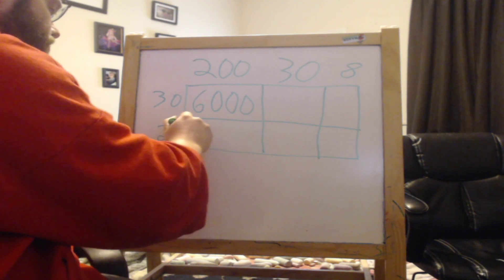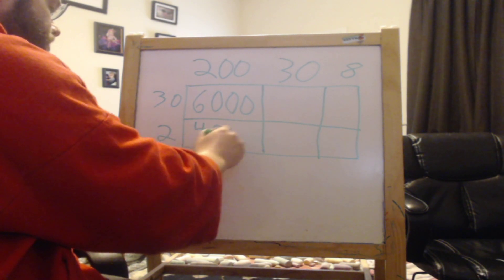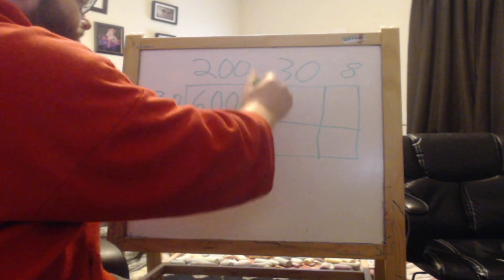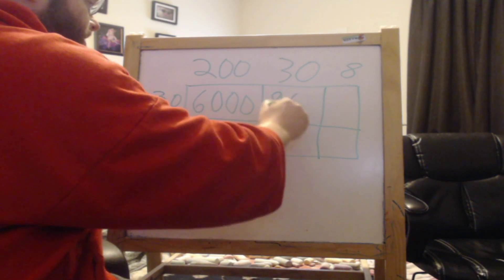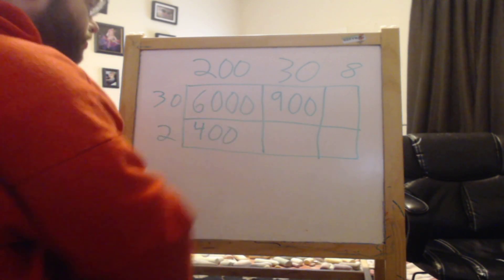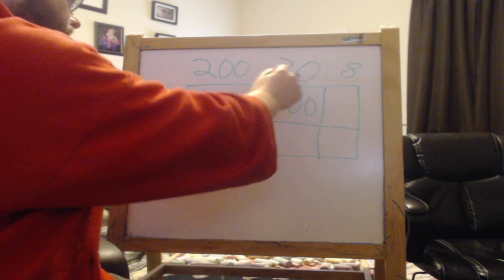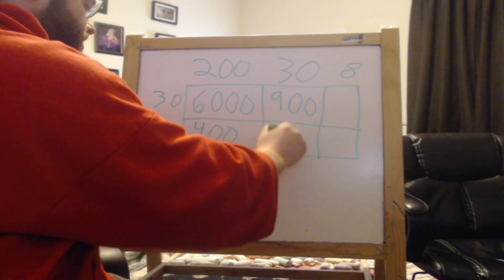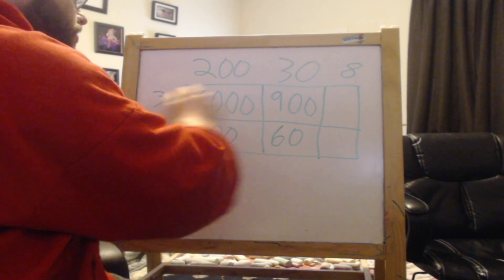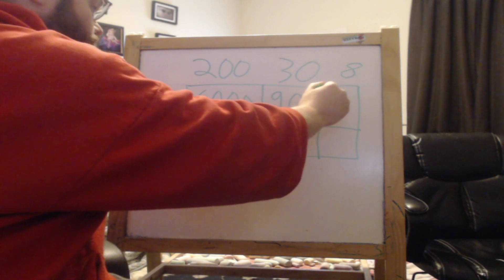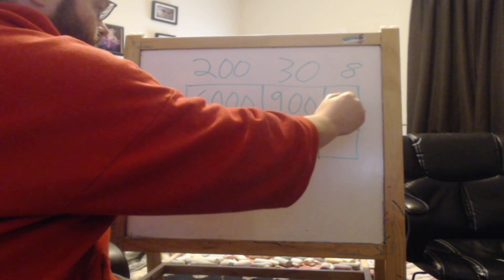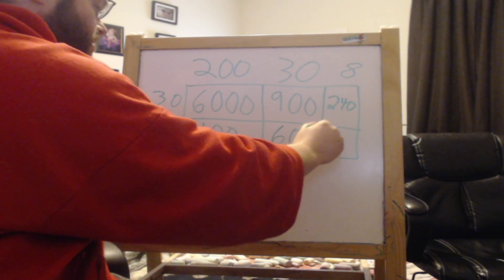200 times 2 is 400. 30 times 30: 3 times 3 is 9, we're adding the zeros, 1 from each, so it's 2 zeros: 900. 2 times 30 would be 60. Now 30 times 8: I know 3 times 8 is 24, and we're adding the zero. 2 times 8 equals 16.